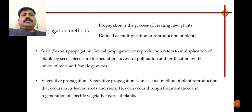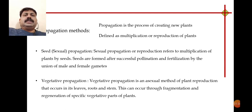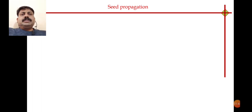In seed propagation, seeds are used as a source for propagation and multiplication of plants, and these seeds are formed by pollination and fertilization — by union of male and female gametes. In vegetative propagation, also called asexual method of propagation, we use a plant part — maybe stem, leaf, roots, or some other modified structures of the plant — as a propagating agent. We will look at these two methods one by one.